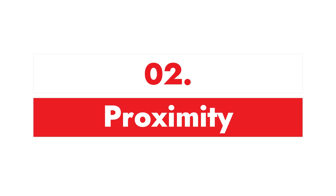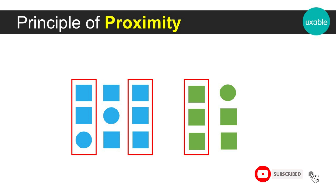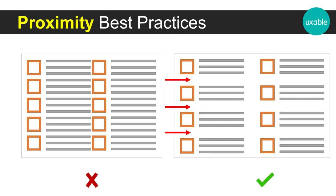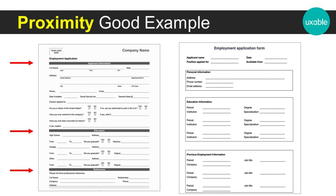Best practice number two is proximity. I have covered proximity as design principle number one in my last video — the YouTube link is in the description below. The law of proximity is one of the basic Gestalt principles: it states that objects located near each other appear to be similar or part of the same element. In this example, you can see how a form is laid out — personal information is segregated into one section, educational information into another, with all related fields grouped together.